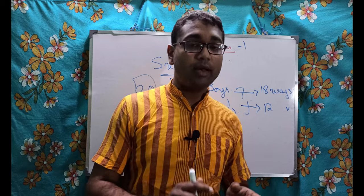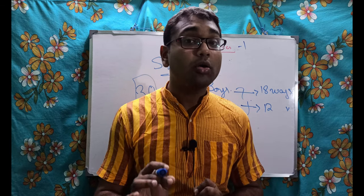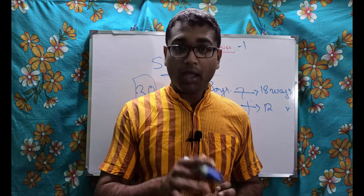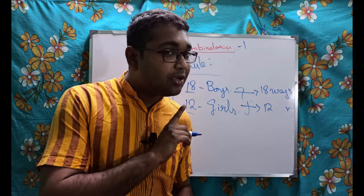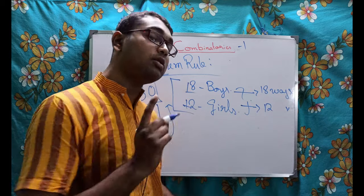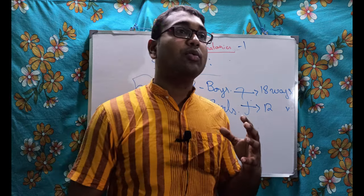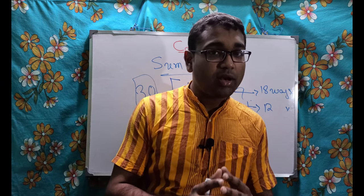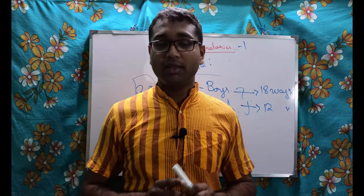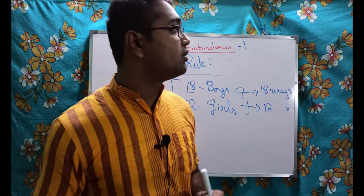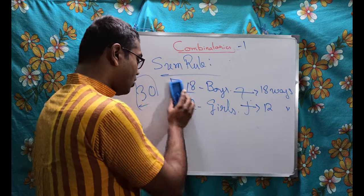One important point: the Sum Rule says that two things cannot occur simultaneously. You have chosen one boy as class representative — you cannot also choose one girl for the same post. When this type of simultaneous happening cannot occur, then only we will be able to use the Sum Rule.